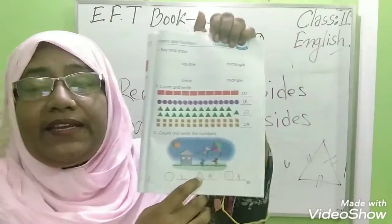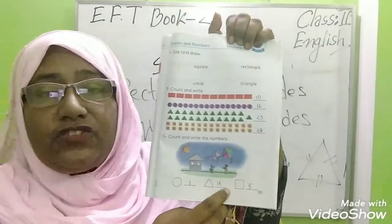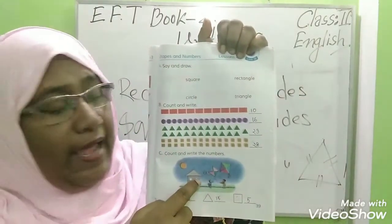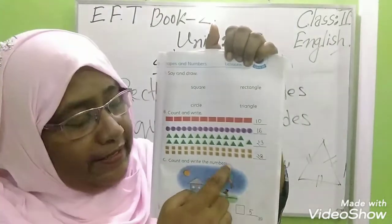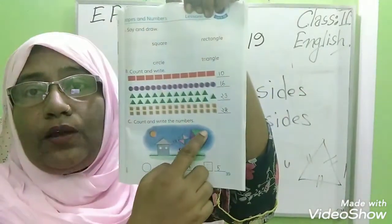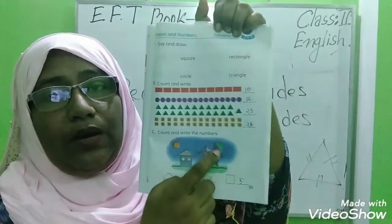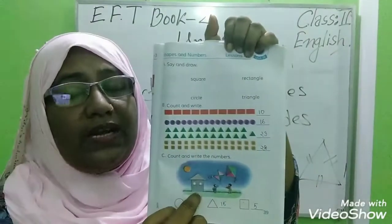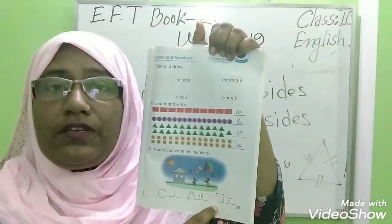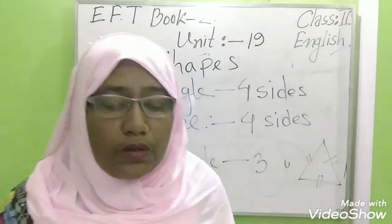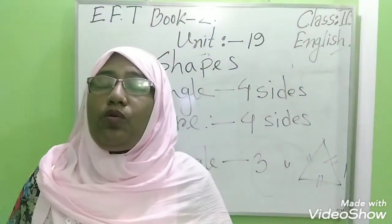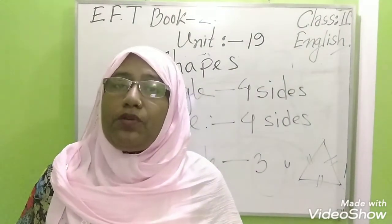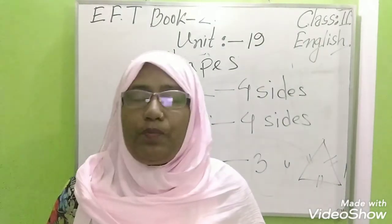We can count 50 triangles, and in the square we can get 5 squares — 1, 2, 3. And there are 2 kites which we can see. So this is our today's class. I hope you all enjoyed the class. Stay at your home, keep yourself clean and safe. Goodbye everybody.